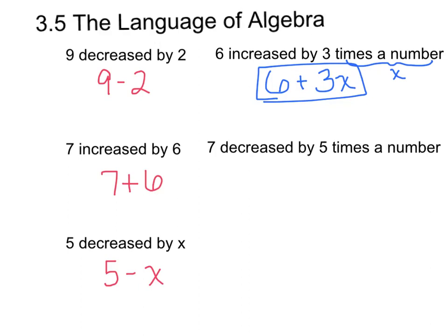Next example. Seven decreased by five times a number. Seven decreased by five times a number. What would you write? Seven decreased by five times a number. And once again, you could have seven minus five y, seven minus five w. When it says a number, you can plug in any variable that you would like.